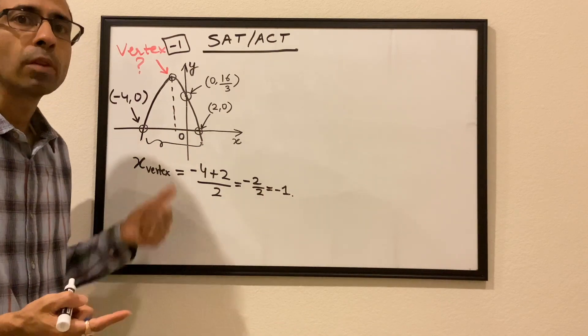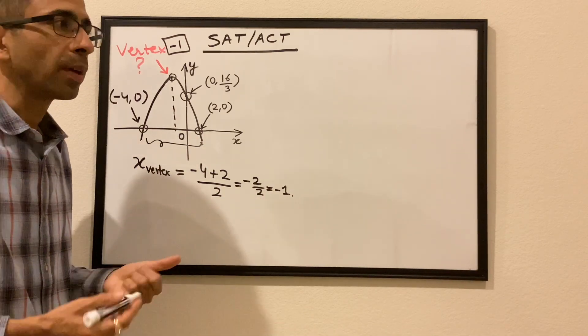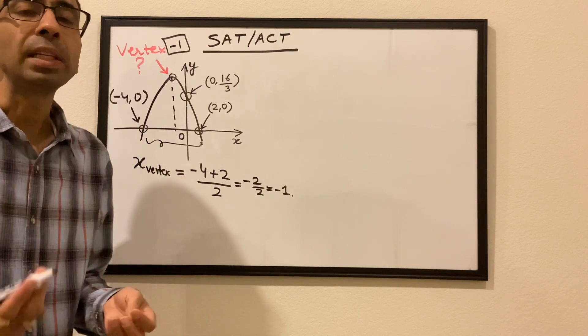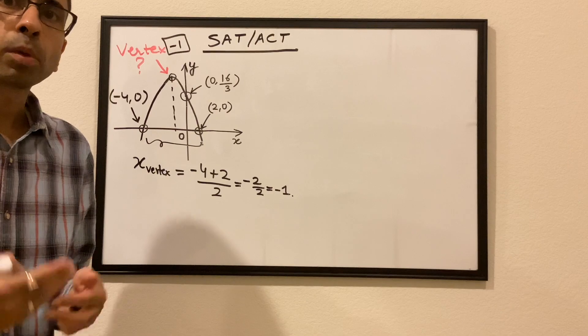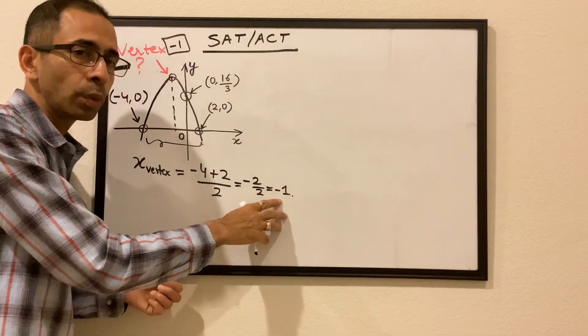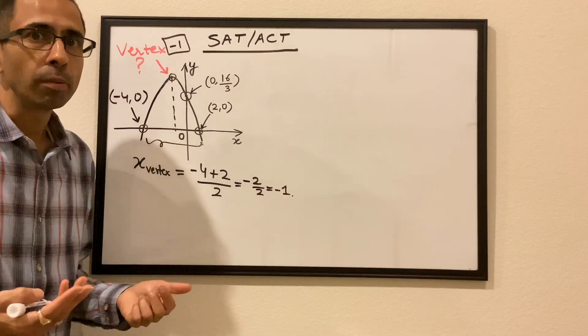All we got to do is to now find the y-coordinate of the vertex, and for finding the y-coordinate, we will need to have the equation of the parabola. Once we have the equation of the parabola, we can put x equal to -1 and get the corresponding y and we will be done.